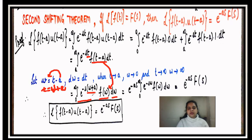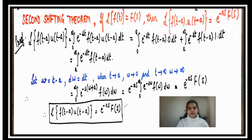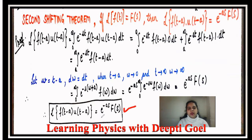Since e^(-as) is a constant with respect to w, it comes out of the integral. We are left with e^(-as) times the integral from zero to infinity of e^(-sw)·f(w) dw, which is just the basic Laplace definition in the variable w — equal to e^(-as)·F(s). So the Laplace of f(t - a)·u(t - a) = e^(-as)·F(s).